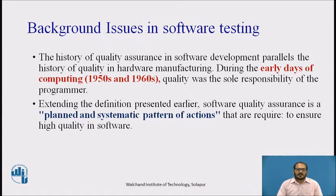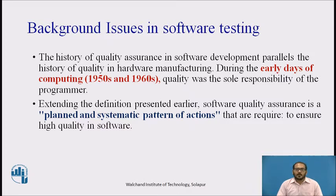Software quality assurance is a planned and systematic pattern of actions required to ensure high quality in software. The scope of quality assurance responsibility is best described by paraphrasing a once popular automobile commercial: quality is job number one. The implication for software is that many different constituencies share the SQA responsibility, including software engineers, project managers, customers, salespeople, and individuals who serve within a software quality assurance group.